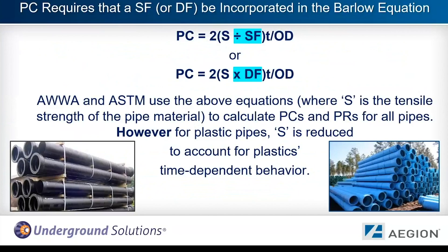Pressure class requires that a safety factor be incorporated in the Barlow equation. AWWA and ASTM use the equation shown on this slide, where S is the tensile strength of the pipe material. To calculate the pressure classes for all pipes, this is the equation. However, for plastic pipes, S has to be reduced to account for a plastic's time-dependent behavior.